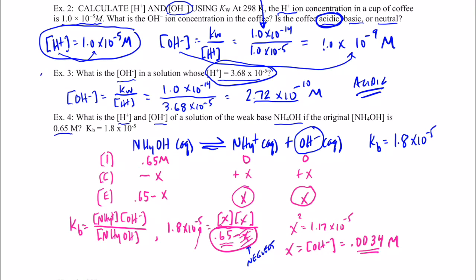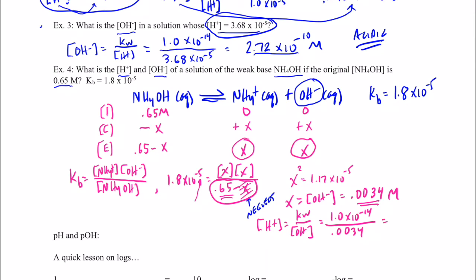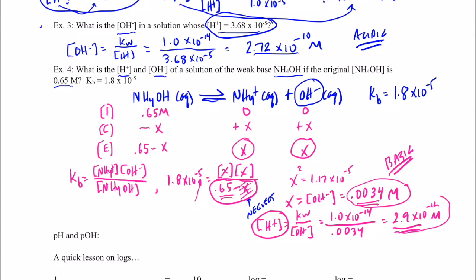We also want the hydrogen ion concentration. To find it when we know the hydroxide, we use Kw over the hydroxide concentration. So Kw, 1.0 times 10 to the negative 14th, divided by the hydroxide we just solved for, 0.0034, gives us 2.9 times 10 to the negative 12th moles per liter of hydrogen ions. This solution is basic, because the hydroxide concentration is greater than the hydrogen ion concentration.